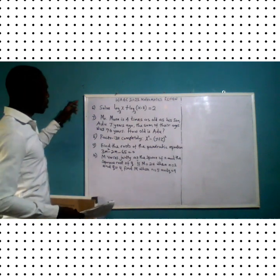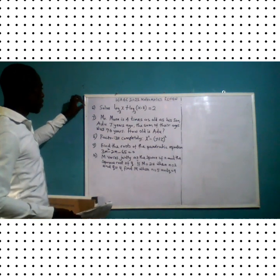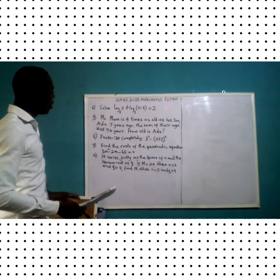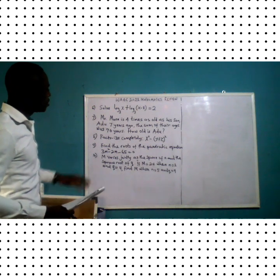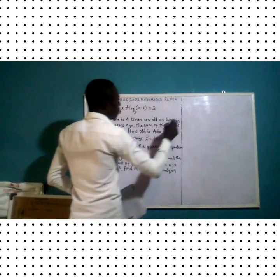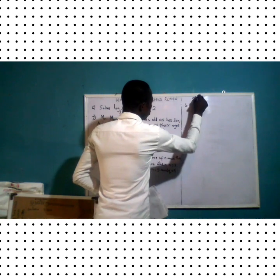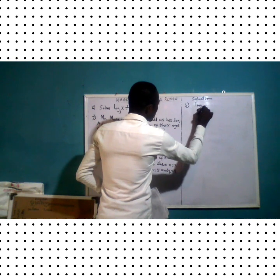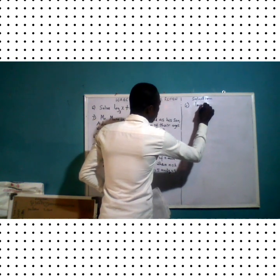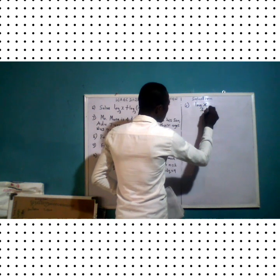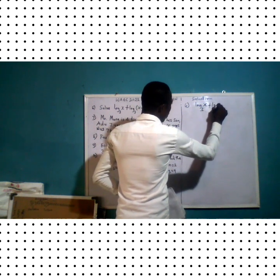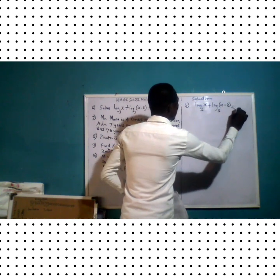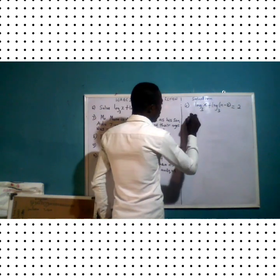Let's have question number six. We stopped at question number five in the last video, so we continue from question number six. We are asked to solve a logarithm equation. The logarithm equation is stated as: log of x to base three plus log of (x minus x) to base three equals two.